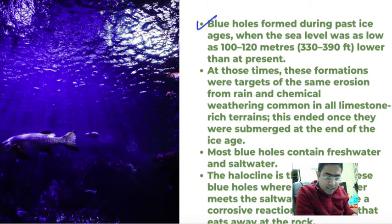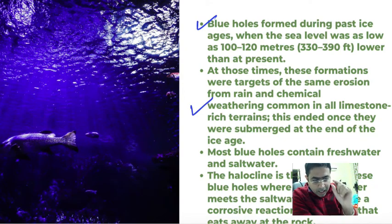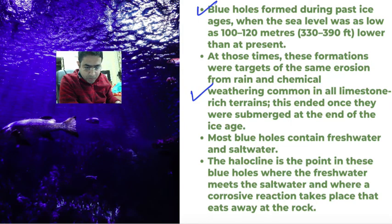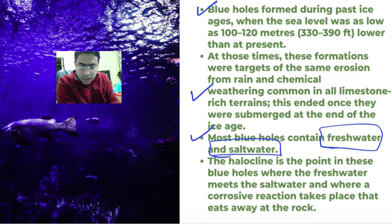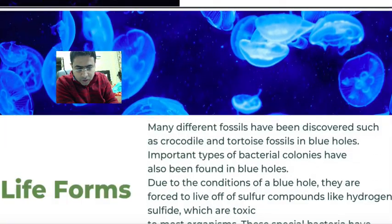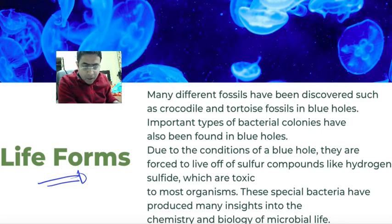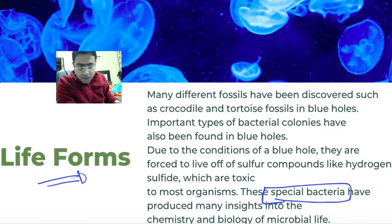As explained, blue holes form during the Ice Age through weathering. When a blue hole forms, there will be both saline water and fresh water present. In all blue holes, both fresh water and salt water are available, which causes chemical reactions. Due to the presence of both types of water, corrosion begins in the rocks there. So basically the hole starts with a different type of life form. In normal conditions there is oxygen, but the biggest reason here is there is no oxygen. So there is a special type of bacteria that survives on sulfur compounds like hydrogen sulfide.